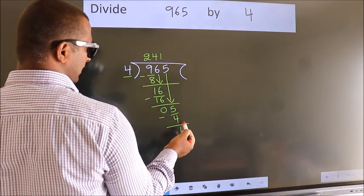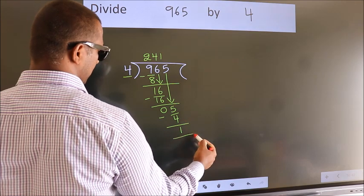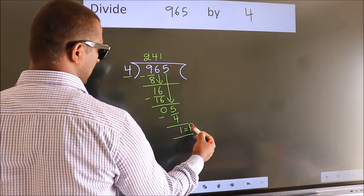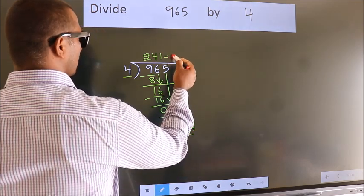No more numbers to bring it down. So, we stop here. This is our remainder. This is our quotient.